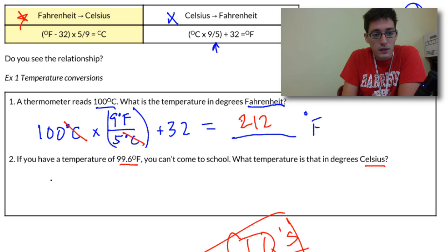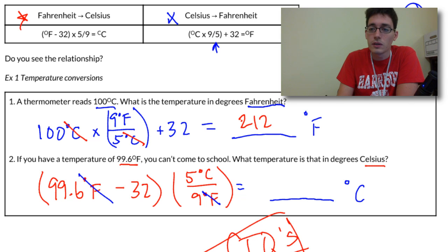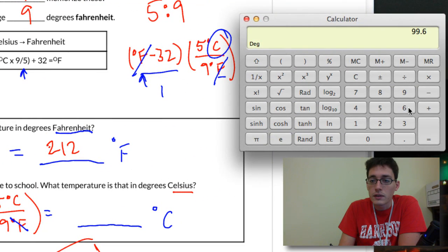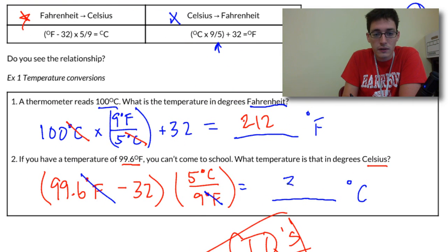We've got 99.6 degrees Fahrenheit. We need to subtract 32 from this, and then we multiply that by a conversion factor of 5 degrees Celsius over 9 degrees Fahrenheit. Again, Fahrenheit in the numerator, Fahrenheit in the denominator, so your scales cancel, and our answer is going to be in degrees Celsius. Let's grab that calculator: 99.6 minus 32 equals 67.6, then we multiply by 5 divided by 9 using parentheses, and that gives us a temperature on the Celsius scale of 37.6 degrees.